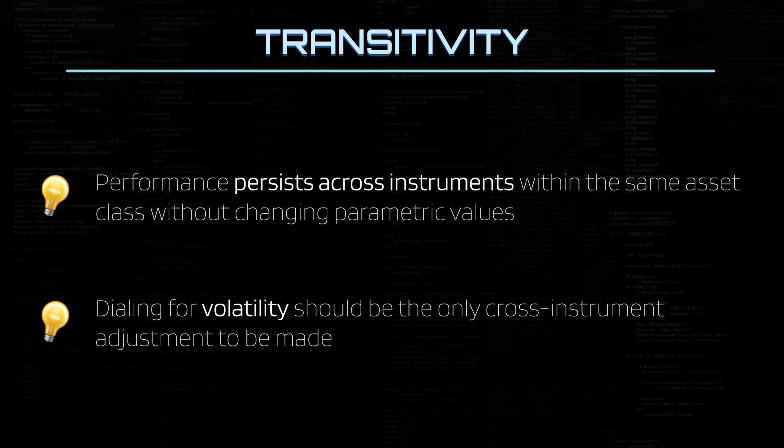Imagine that you built a system on EURUSD that checks all four quadrants. Then the only thing to adjust in order to port it to GBPJPY, for example, should be the volatility used to calibrate how other parameters interact with one another — dialing your multiples of a standard deviation or an ATR as you see fit should suffice. You should not have to change anything relating to the actual code logic. One would not have that luxury with a system grounded in optimization, because it would never actually capture the price motion dynamics of currencies. That's how you should know to be wary of those systems built specifically for one single instrument — they scream failure from the get-go.